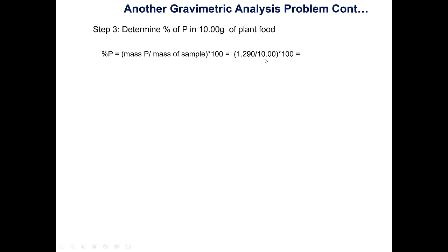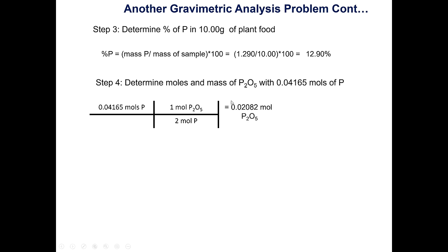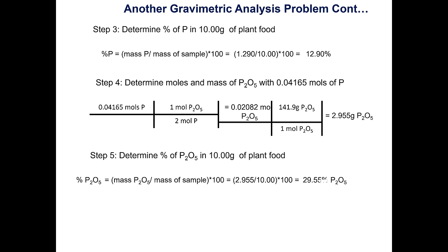We take the mass of phosphorus divided by the mass of the fertilizer sample to get the actual percent — for example, 12.9%. To find the percent P₂O₅, use the moles of phosphorus with a 2-to-1 mole ratio to find moles of P₂O₅, then multiply by its molar mass to get the mass of P₂O₅. Note that the mass of P₂O₅ should always be greater than the mass of phosphorus. Dividing by the fertilizer mass and multiplying by 100 gives the percent P₂O₅, which should match the NPK ratio.